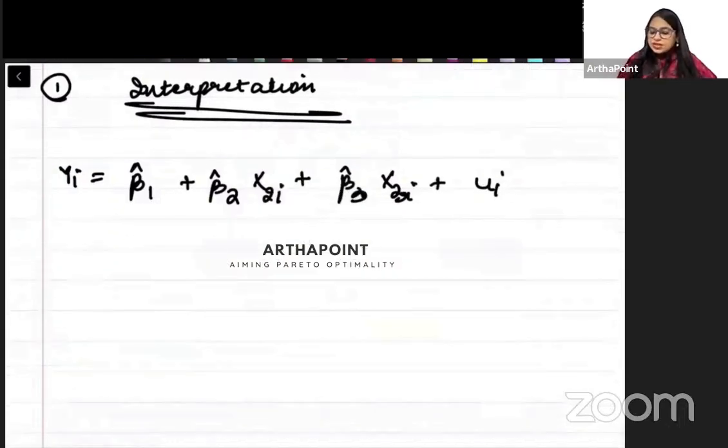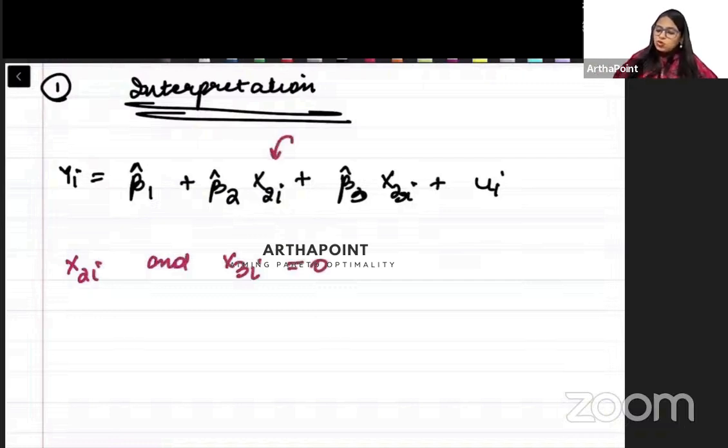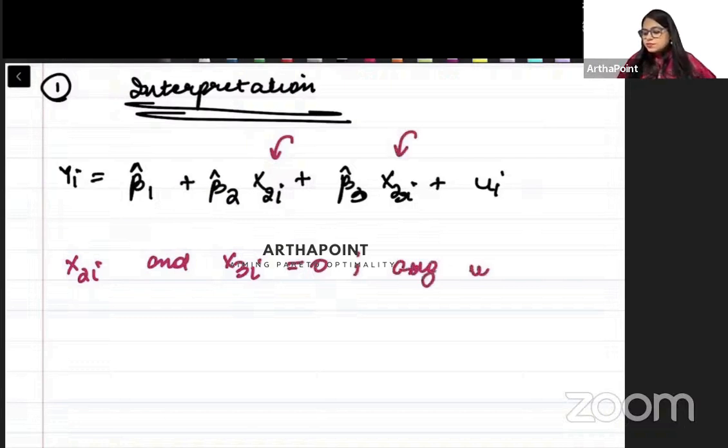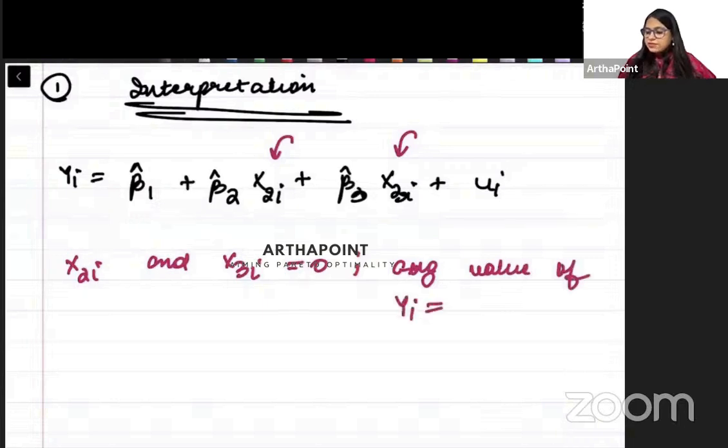Try to understand that if your x2i and x3i are zero, if I put zero in both places, then the average value of yi will be beta 1. The value of yi will be beta 1 itself.